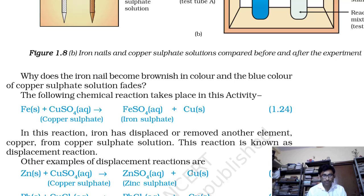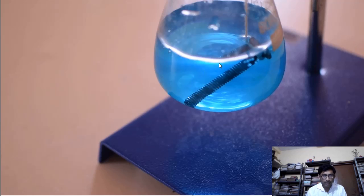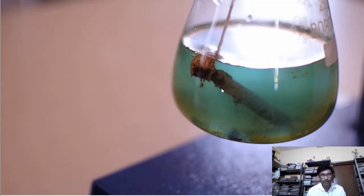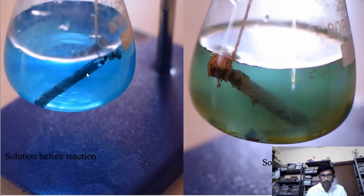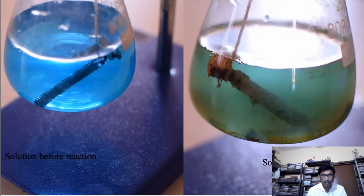Let's look at a demonstration. You can see this copper sulphate solution with an iron nail in it. After 24 hours you can see a copper deposit on the nail — iron has displaced copper from the copper sulphate solution, and copper has deposited on the iron nail.